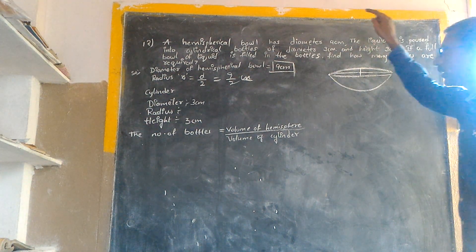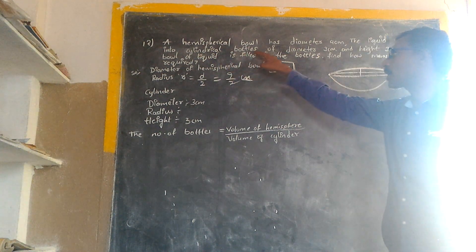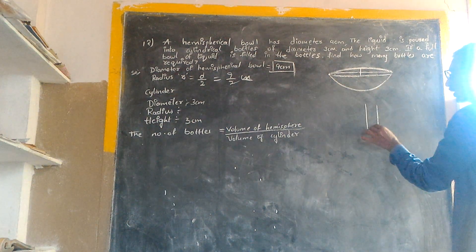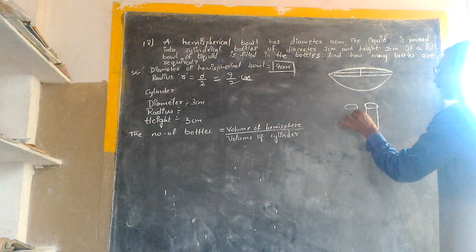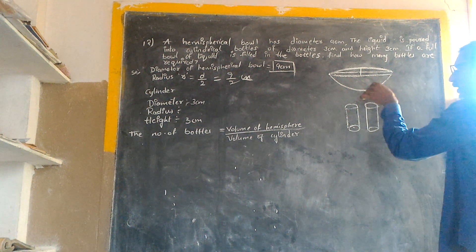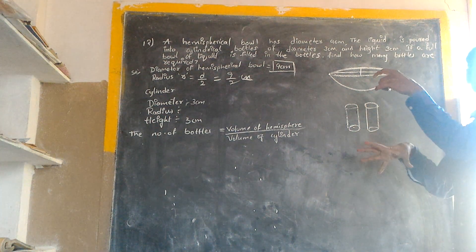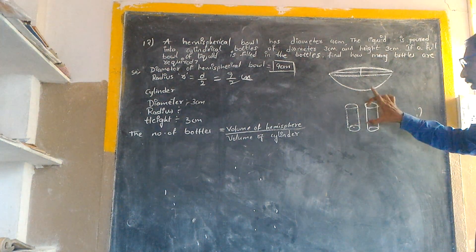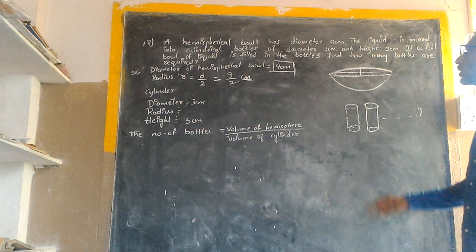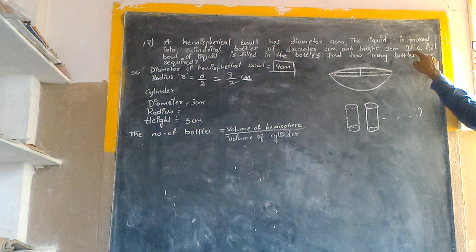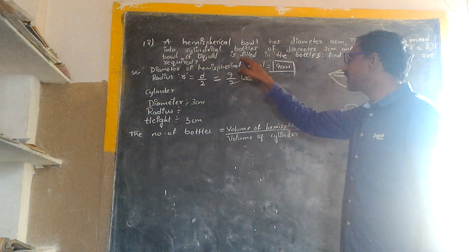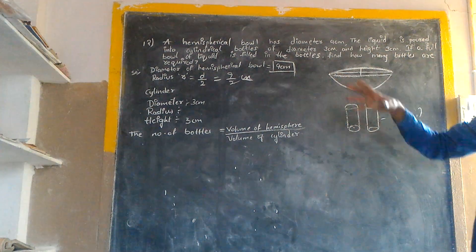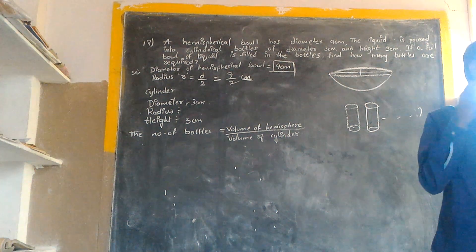The liquid is poured into a cylindrical bottle of diameter 3 centimeters. We need to find how many bottles are required.